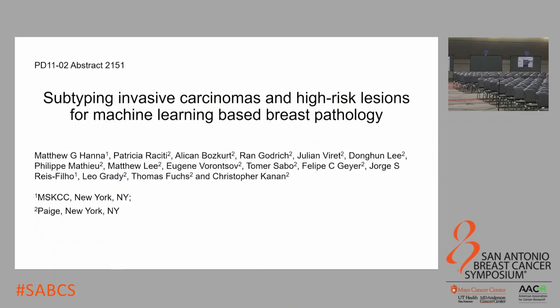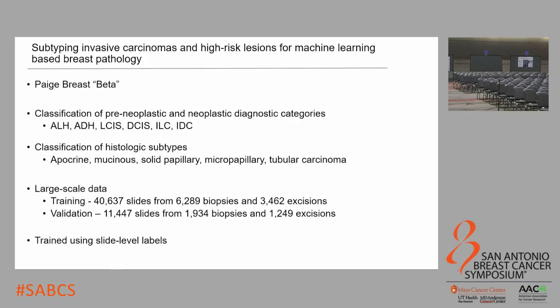The next poster is from Matthew Hanna at Memorial Sloan Kettering with co-authors from Page AI, called 'Subtyping Invasive Carcinomas and High-Risk Lesions for Machine Learning-Based Breast Pathology.' This is a very exciting poster looking at developing clinical grade breast computational pathology, analogous to the Page Prostate product mentioned before — they're calling this Page Breast Beta. Beta is a software term for a pre-release or prototype. This covers a wide spectrum of diagnoses and histologic subtypes, aiming to be a comprehensive classifier of not only diagnosis but also histologic subtype.